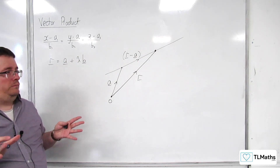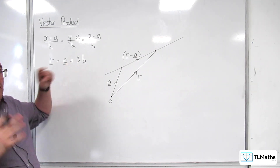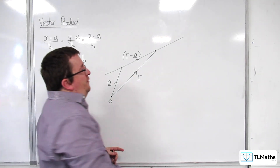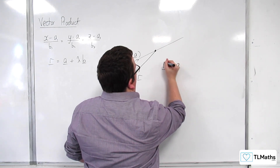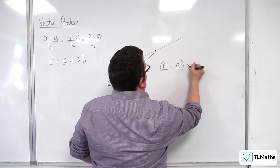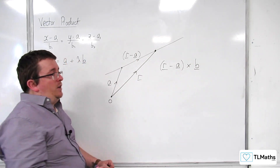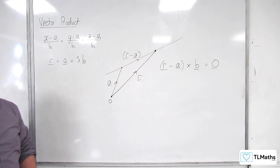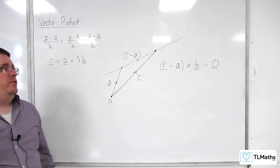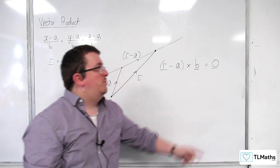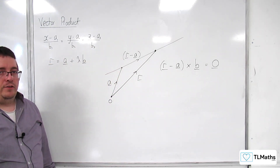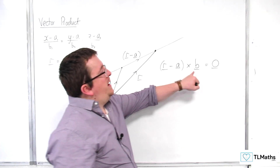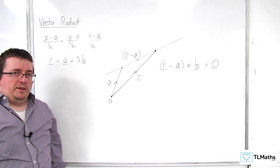What we know is that b is a vector that is parallel to the line. Therefore, the vector product of (r minus a) and the vector b must be equal to 0 — it must be equal to 0 because they are parallel to one another. And so this is the vector product form of a line in three dimensions, where a is a point on the line and b is a vector that is parallel to the line.